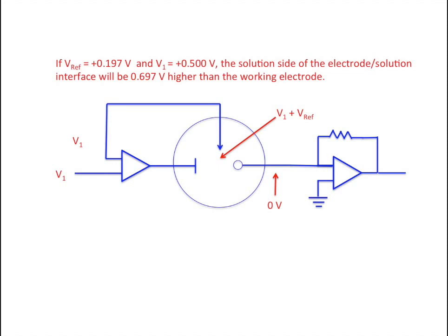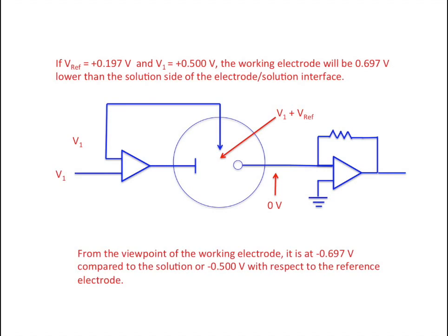Let's think about the system from the point of view of the working electrode. What does it see? Looking into solution, it finds that it's more negative than the solution by 0.697 volts, or actually minus one half of a volt with respect to the reference electrode.